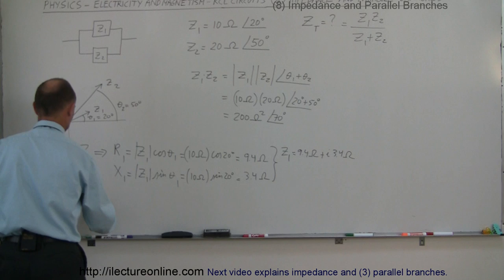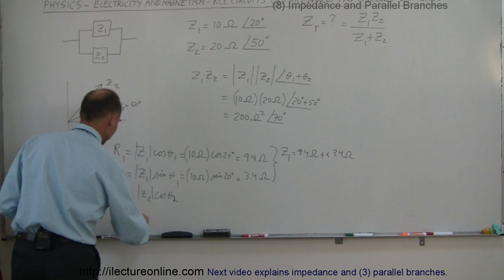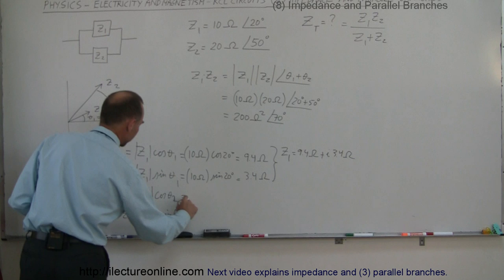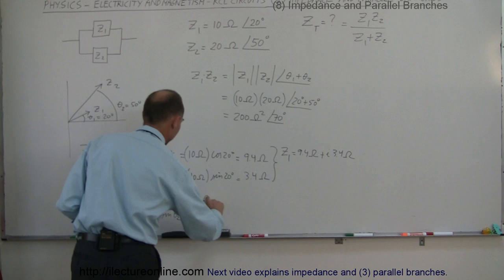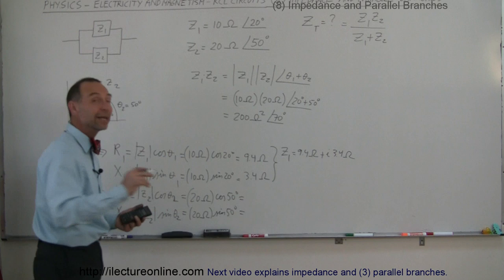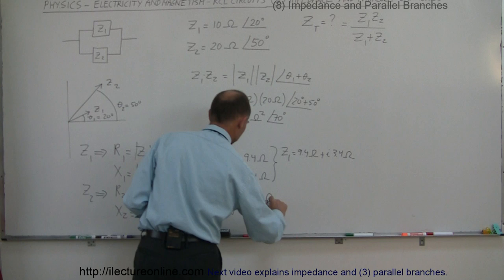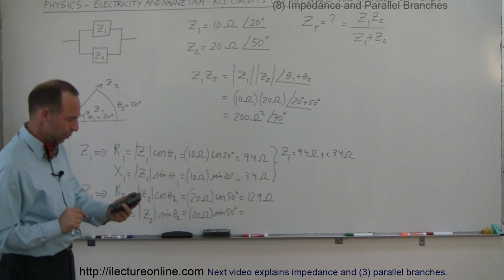Now let's do the same for Z2. We need to find R2 and X2, where R2 equals the magnitude of Z2 times the cosine of theta-2, and X2 equals the magnitude of Z2 times the sine of theta-2. The magnitude is 20 ohms for both. So we compute 20 times cosine of 50 degrees, which gives 12.9 ohms, and 20 times sine of 50 degrees, which gives 15.3 ohms.